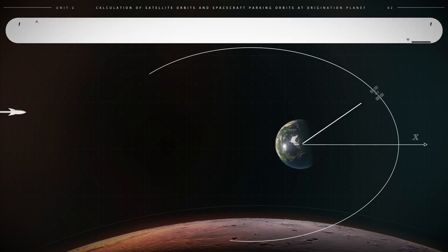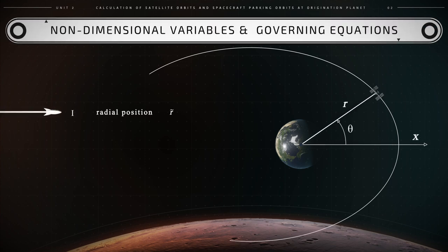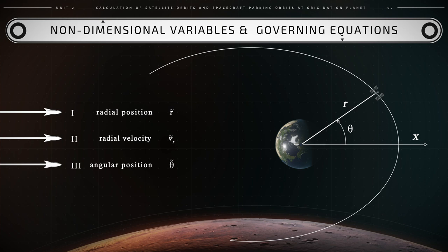In a previous video we explained that the motion of a spacecraft around a planet like Earth may be calculated using four non-dimensional expressions with the following four non-dimensional variables: 1) the position r, that is the distance between the center of mass of Earth and the center of mass of the spacecraft; 2) the radial speed vr, that is the speed of the spacecraft in the radial direction; 3) the angular position theta; and 4) the angular speed omega, which is the rapidity with which the angle theta varies over time.